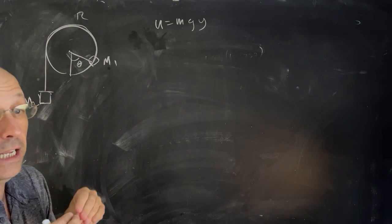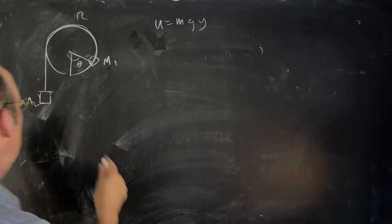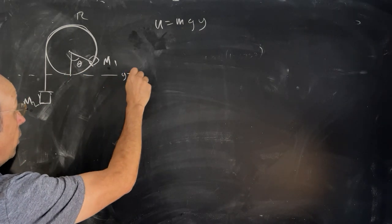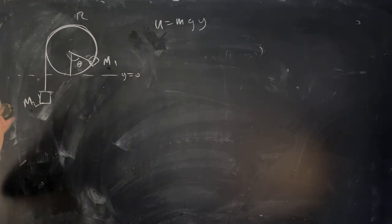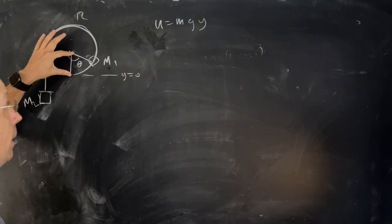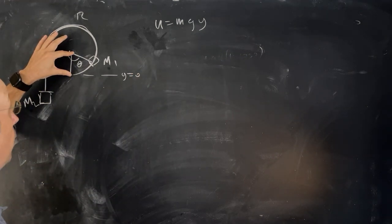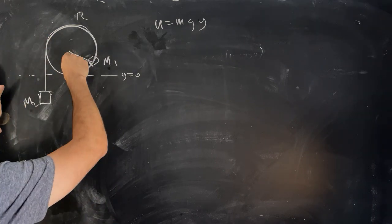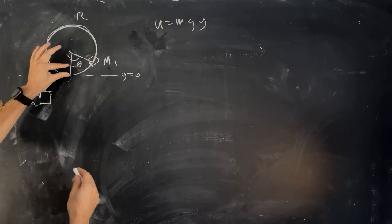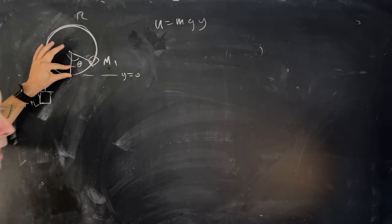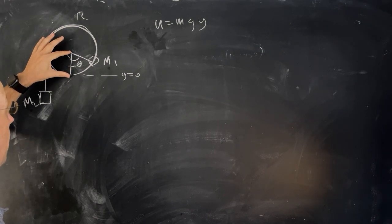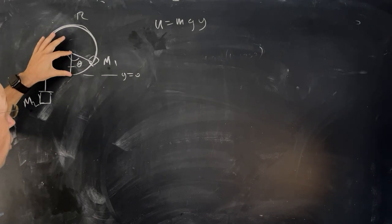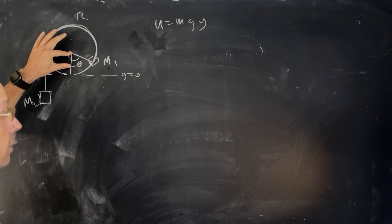And so I want to get the potential energy as a function of theta. To do that, let's call this our y equals zero position. If that's the case, then how high is position m1? Well, it's going to be this distance right there. So that's going to be this distance minus this minus that. So that's R and this is R cosine theta.